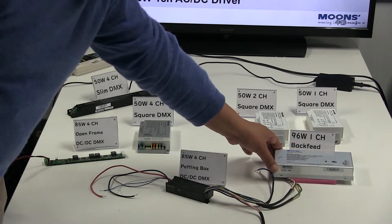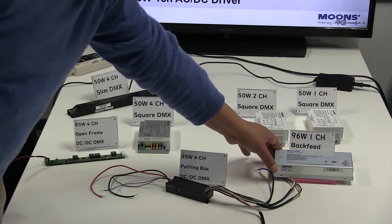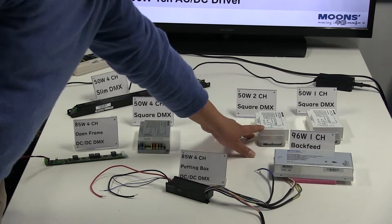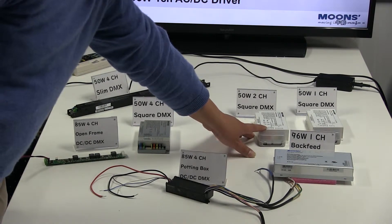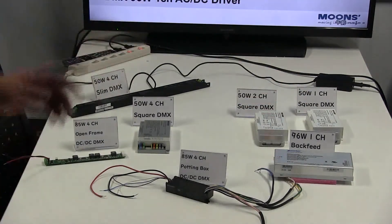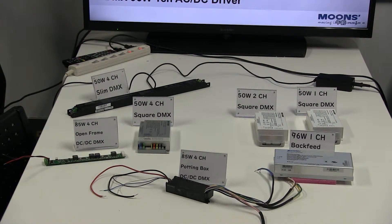This is a 96 wattage DMX power supply. This is a single output 96 wattage DMX power supply. This is a dual output power supply. And the other one is single output. Both of them are square DMX power supplies. These are our diversity of DMX power supplies.